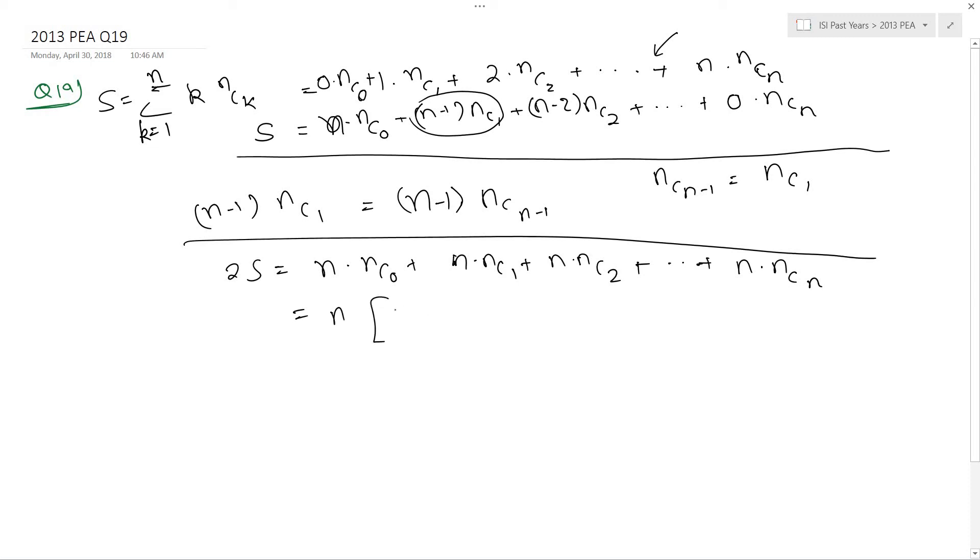This is simply n into summation n c i where i goes from 0 to n, and I know that this summation is nothing but 2 to the power n.